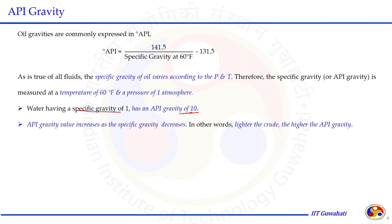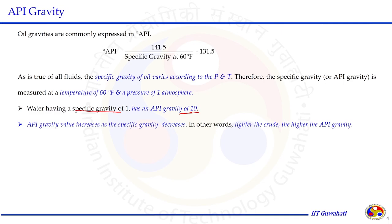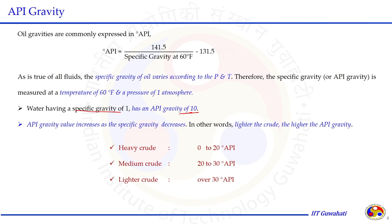Specific gravity varies at different temperature and pressure for all fluids, including crude oil. That is why it is always measured at a particular temperature and pressure condition. API gravity value increases as specific gravity decreases — in other words, the lighter the crude, the higher the API gravity value. For example, heavy crude (more dense) has API gravity in the range of 0 to 20 degrees. Medium crude exhibits API gravity between 20 to 30 degrees, and lighter crude has API gravity above 30 degrees, which may go up to 55 or 60 degrees.